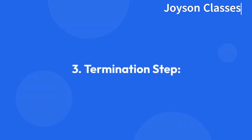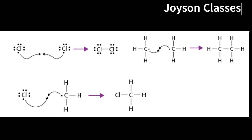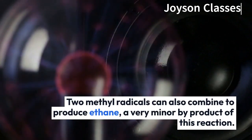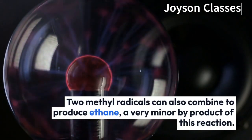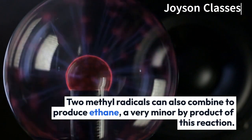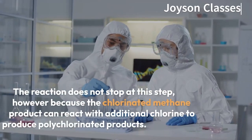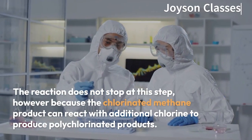Termination step: Termination takes place when a chlorine atom reacts with another chlorine atom to generate Cl2, or a chlorine atom can react with a methyl radical to form chloromethane, which constitutes a minor pathway by which the product is made. Two methyl radicals can also combine to produce ethane, a very minor by-product of this reaction.